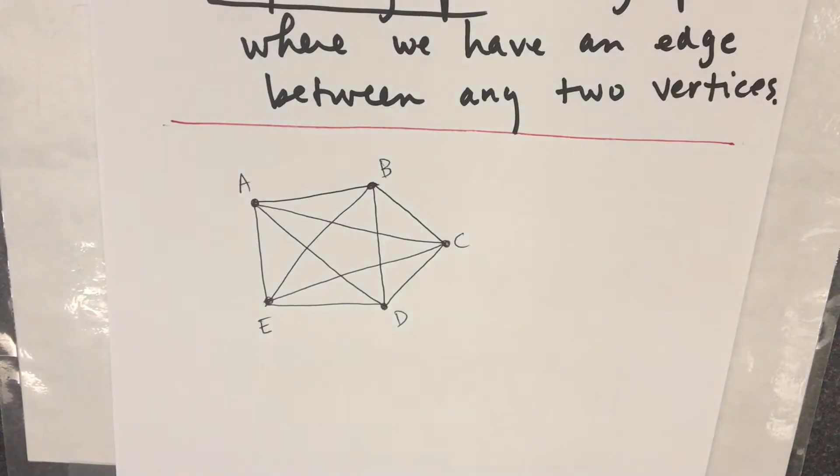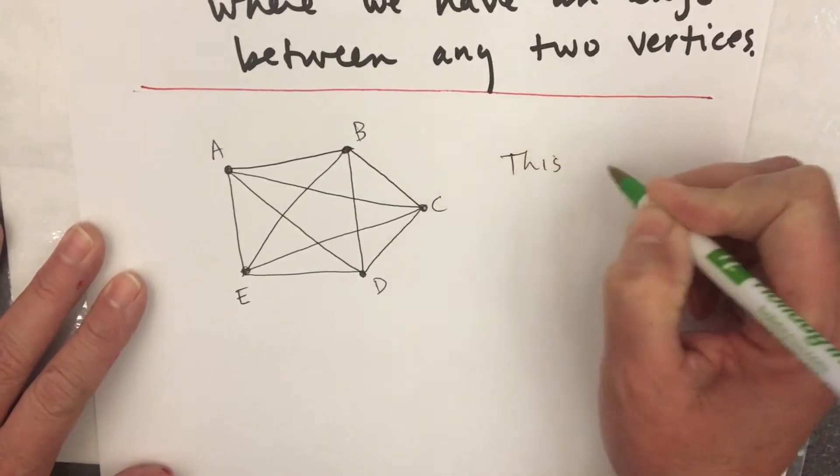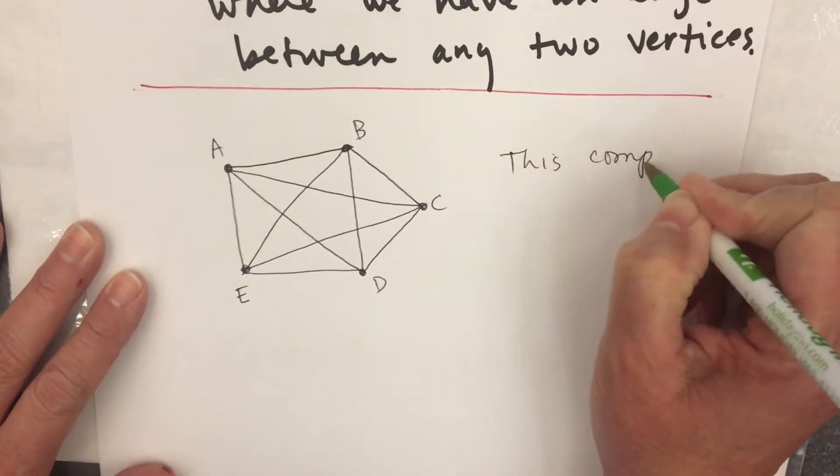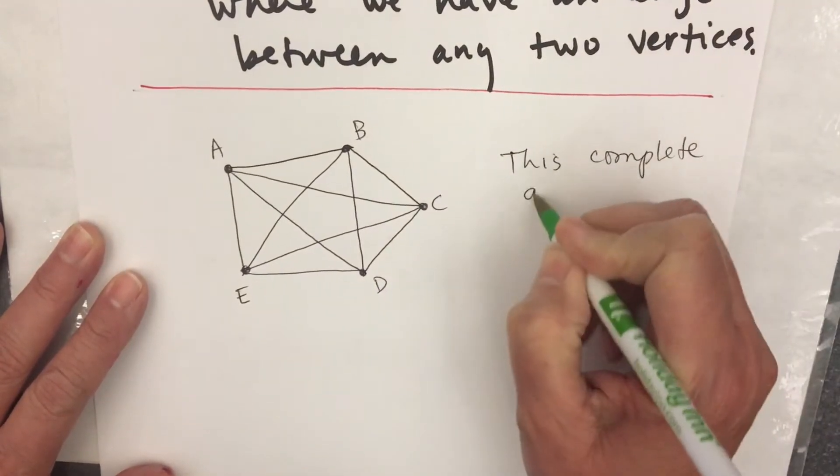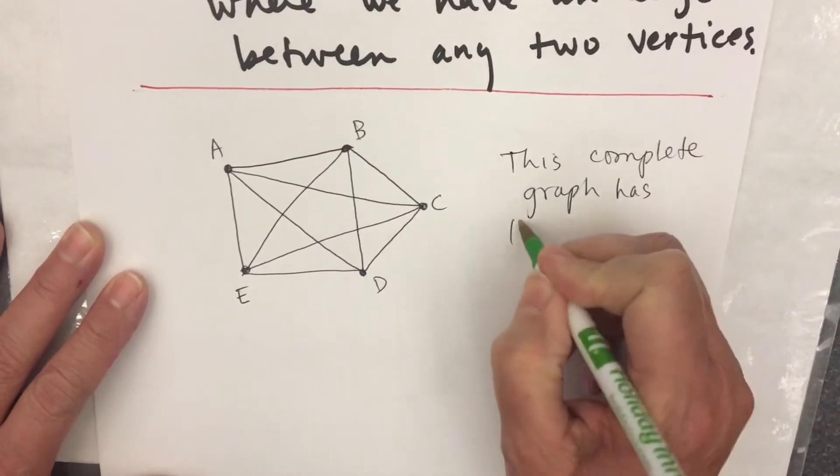So there's a complete graph, and you can kind of look at it and say, well, yes, it has Hamilton circuits, and I'll say that with a plural because there's more than one. This graph, this complete graph, has Hamilton circuits.